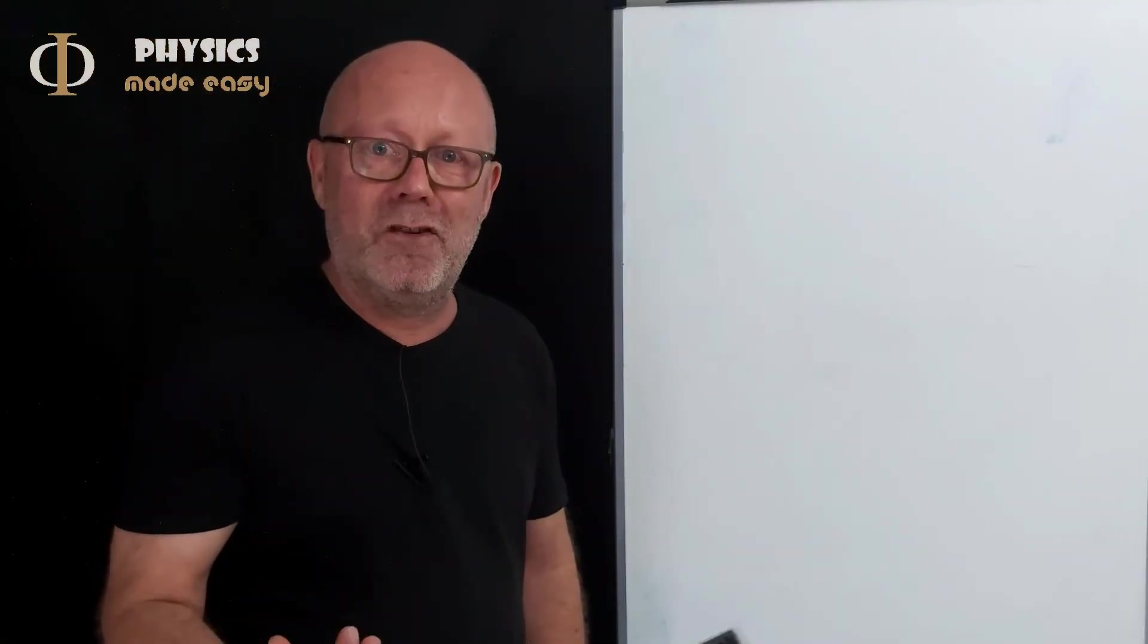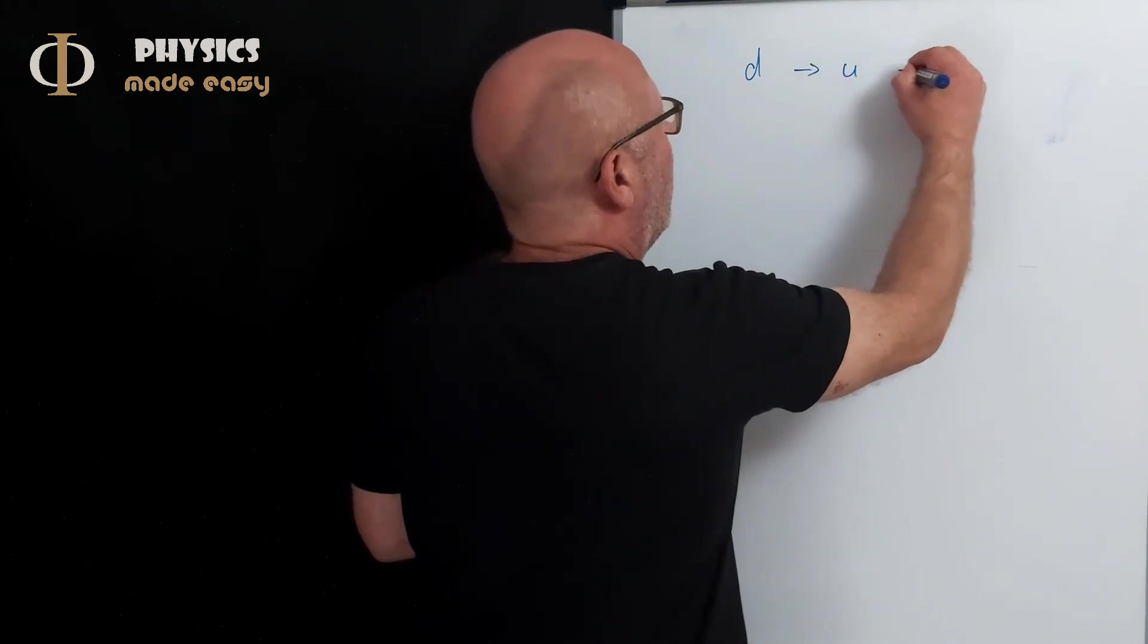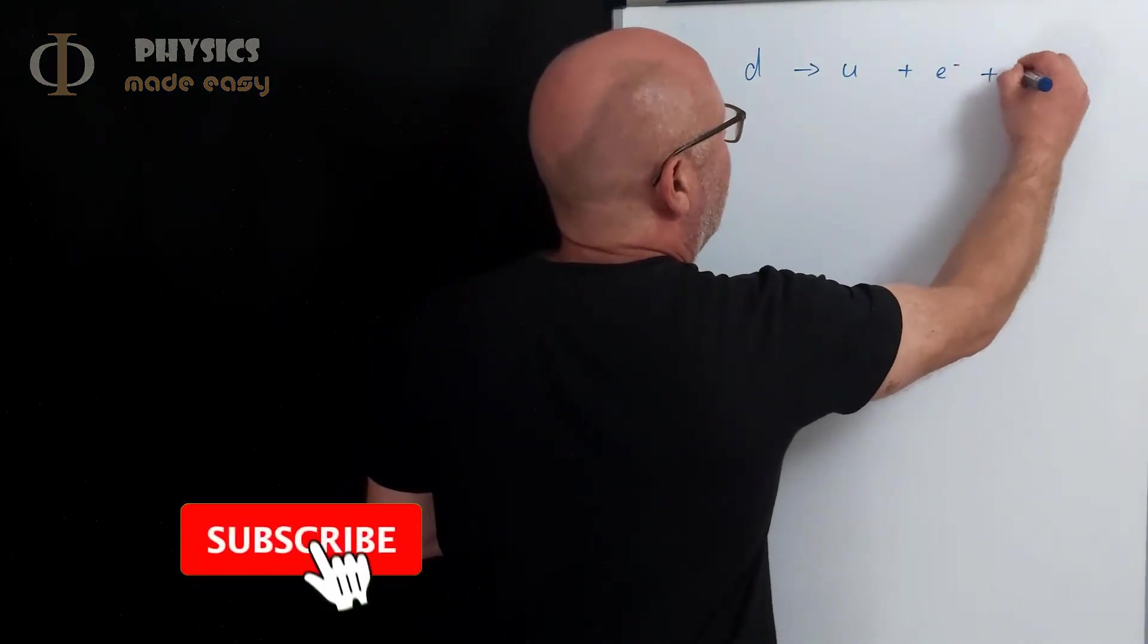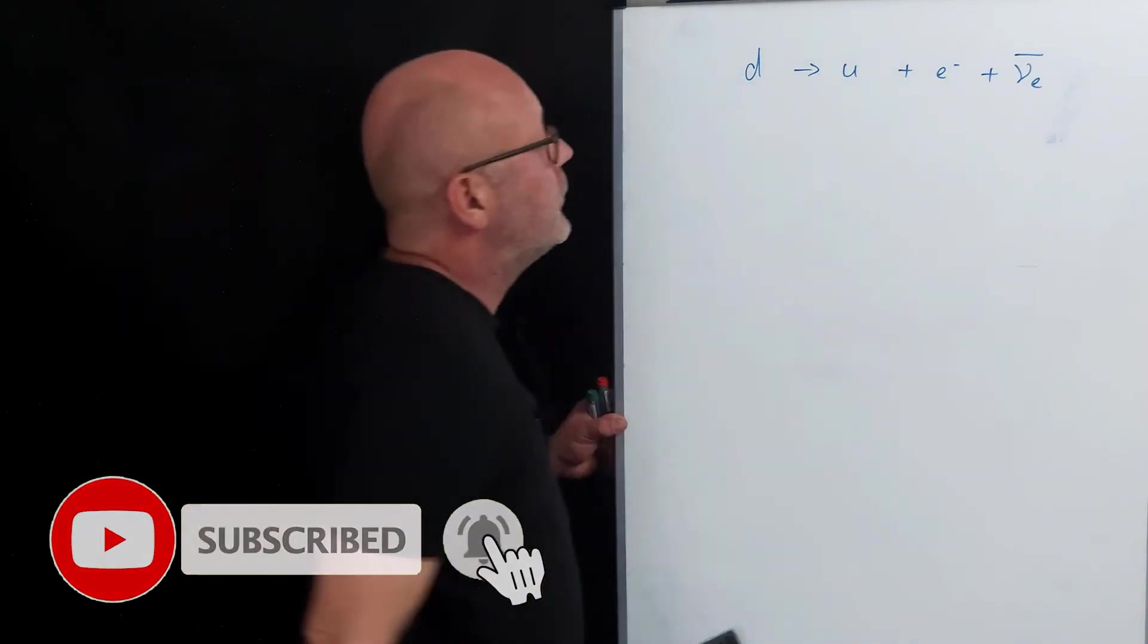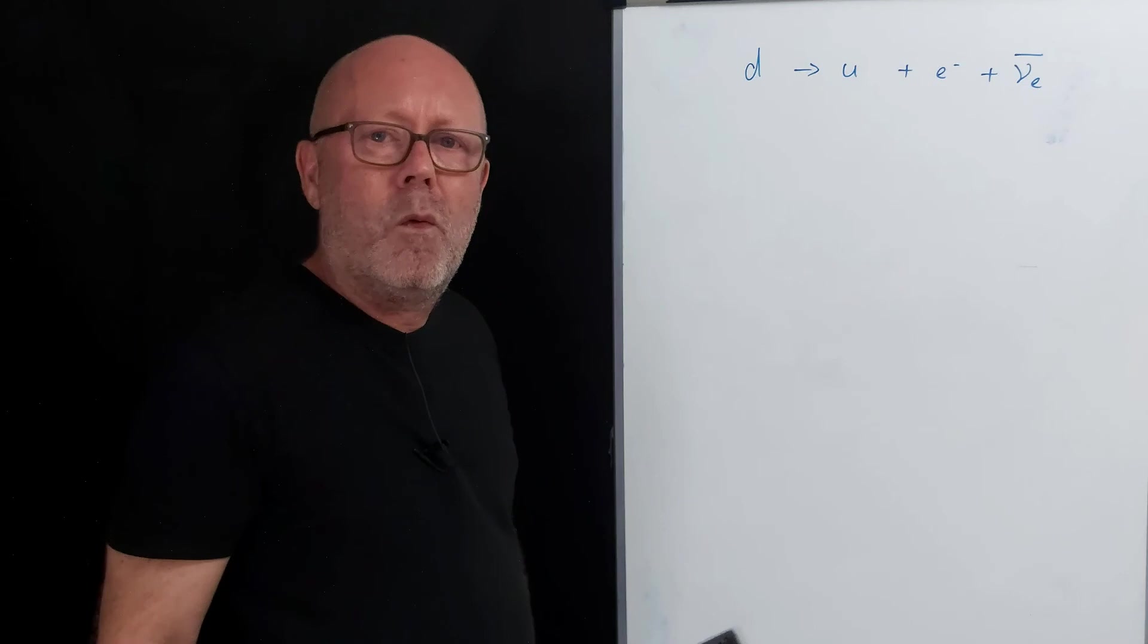Earlier in this video, we mentioned the beta decay, where you have a down becoming an up, plus an electron, plus an anti-neutrino of the electron. This occurs naturally. But do you know why?